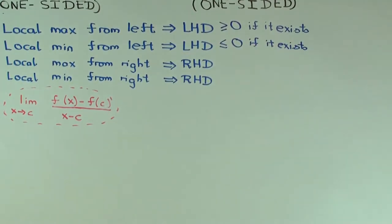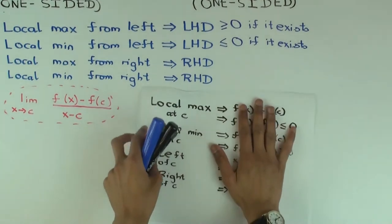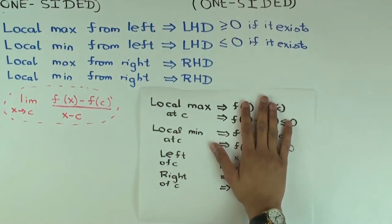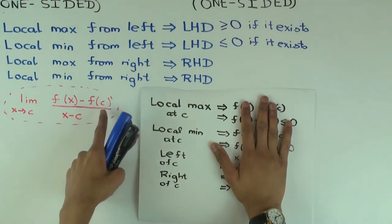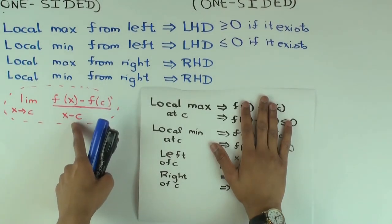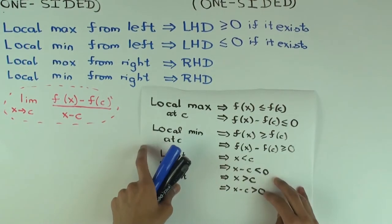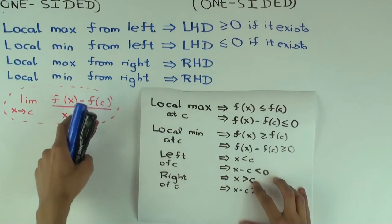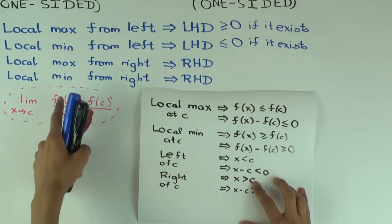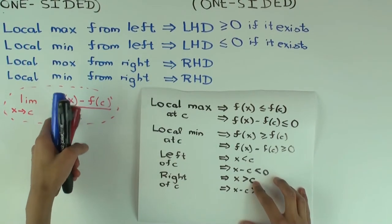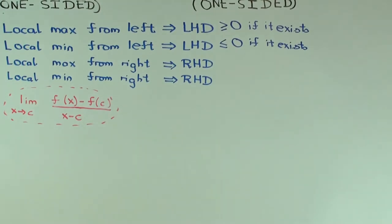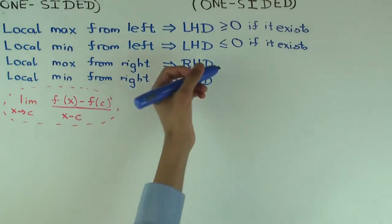Now local max from the right. The numerator f(x) − f(c) is less than or equal to zero, because f(x) ≤ f(c). The denominator x − c is greater than zero since x approaches from the right. So the quotient is less than or equal to zero, and taking the limit you get less than or equal to zero — if it exists.